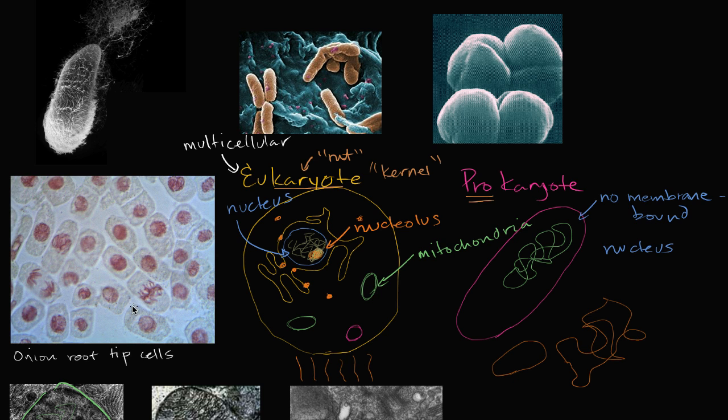This right over here, these are onion root tip cells. So these are plant cells, and you can actually see it's been stained. You can actually see the membrane-bound nucleus here. And this is actually a cool picture, because you can see these cells at different stages of mitosis, which is interesting. Animal cells, the things that make you, you. You are eukaryotic.